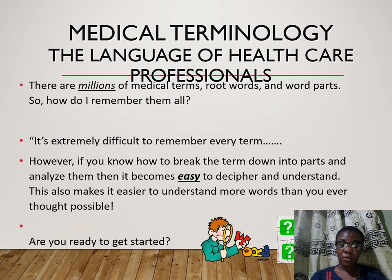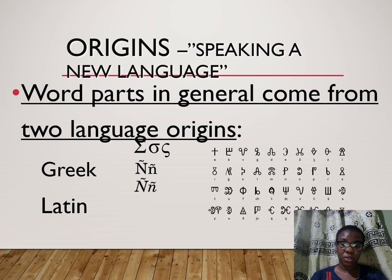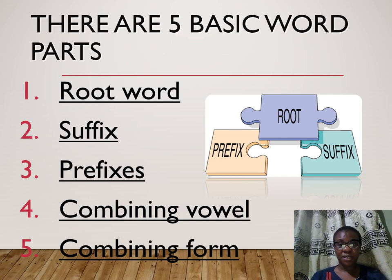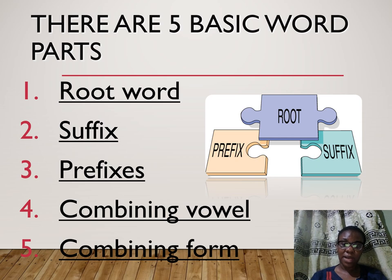That way, one will be able to decipher and understand virtually every medical term that is mentioned to you. To begin, most medical terms have Greek or Latin origin — only a few have English origin. There are five basic word parts: there is a root word that talks about the organ of interest, there's the suffix, there's the prefix, then there's the combining vowel that allows you to bring two root words together, or a root word and a suffix, and also combining forms.